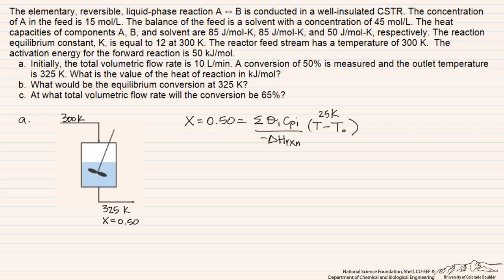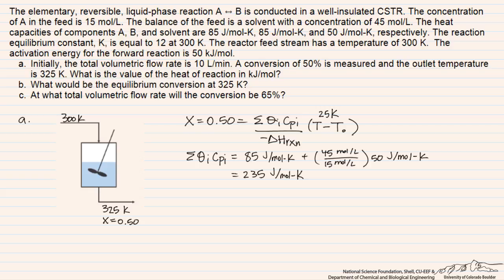The sum of θ_i·C_Pi is basically the total heat capacity of the inlet stream. Our stream consists of both reactant A and an unreactive solvent, and we need to include the heat capacities of both components corresponding to their relative amounts. We can express that as follows: we have 85, which is the heat capacity for component A, and then 45 divided by 15 based on the concentrations of the solvent compared to component A, times the heat capacity for the solvent. Because we have 3 times as much solvent, that gives us a total heat capacity of the stream of 235 J/mol·K.